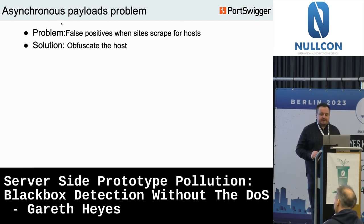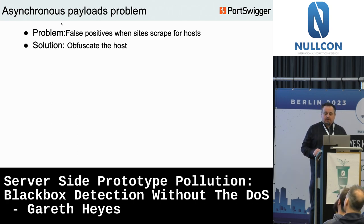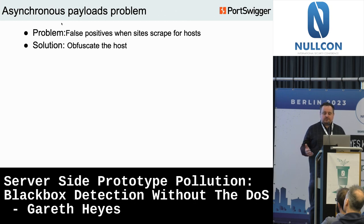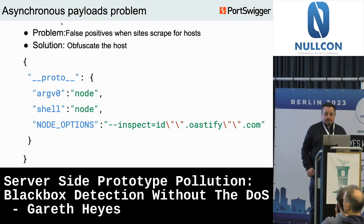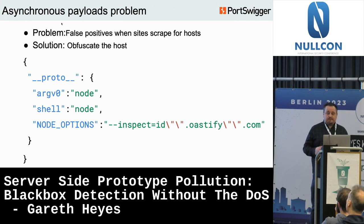The problem with that vector is some sites will scrape JSON for hostnames and create DNS interactions, producing false positives. To solve this, I wanted to obfuscate the host so scraping won't work but the command-line argument would. After trying single quotes, curlies, and other methods, I discovered you can simply use double quotes on every OS — Mac, Linux, and Windows. The double quotes are just ignored, but if you get a DNS interaction using this vector, you've pretty much confirmed prototype pollution, because you'd only get that interaction if prototype pollution occurred.